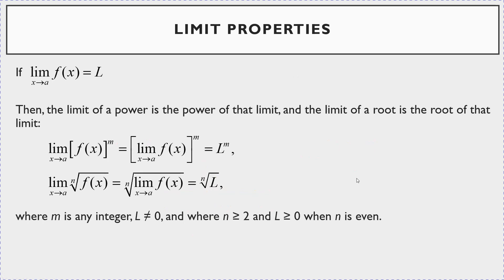If the limit as x goes to a of f(x) equals L, then the limit of a power is the power of that limit: the limit as x goes to a of f(x)^m equals L^m. Similarly, the limit of a root is the root of that limit: the limit as x goes to a of the nth root of f(x) equals the nth root of L. You can move the limit right under the radical and find the limit of f(x), which is L.